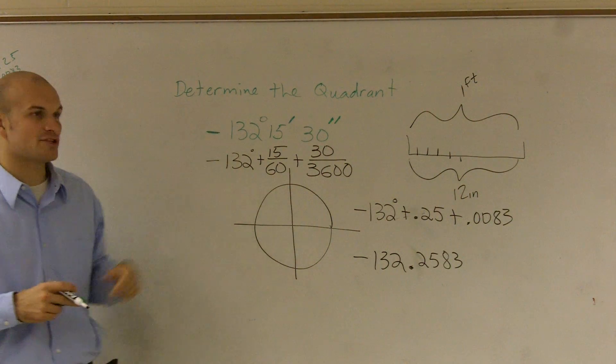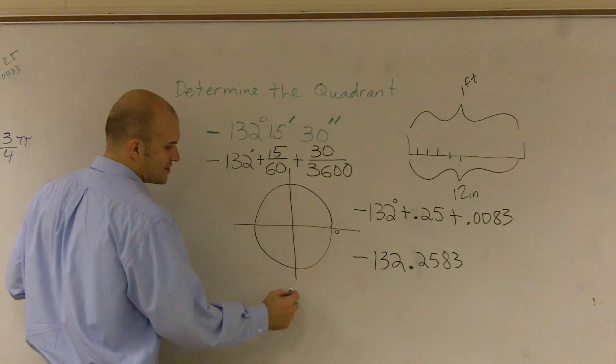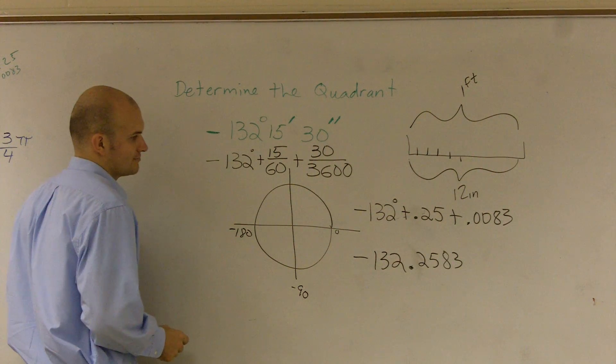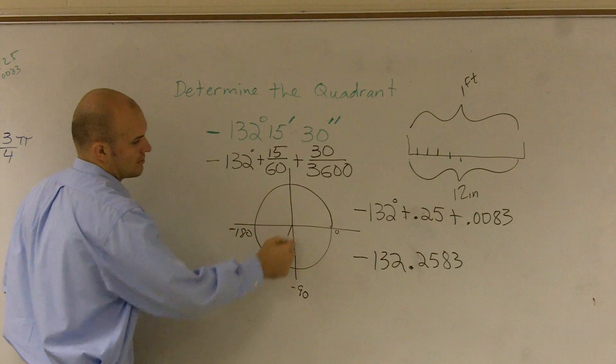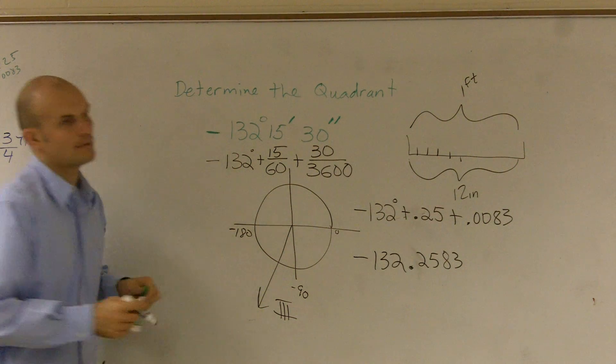So then it says I need to approximate and determine the quadrant. Well guys, I know that if you're starting at 0, this would be negative 90, this would be negative 180. So obviously it's going to be between those two, so it would be something like there. So it would be in quadrant 3.